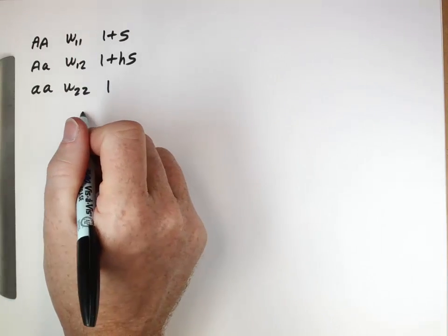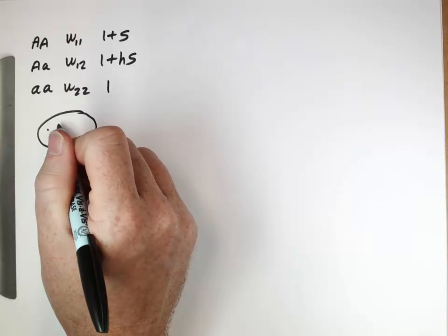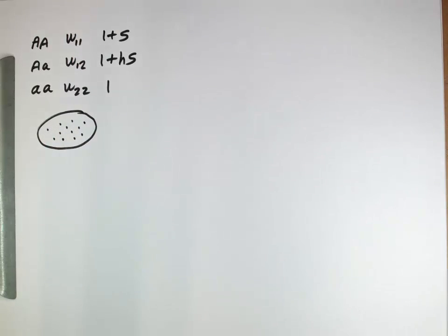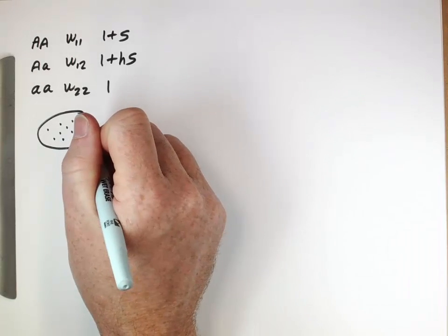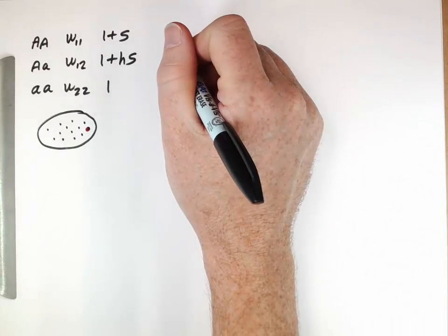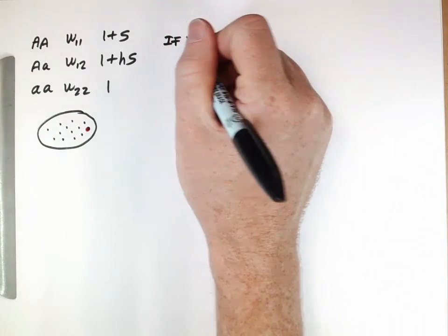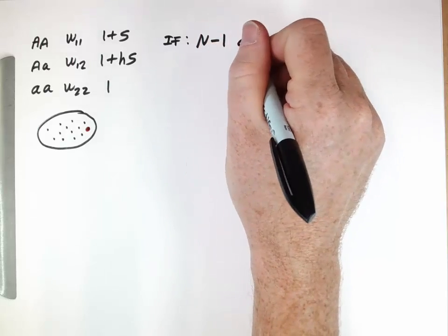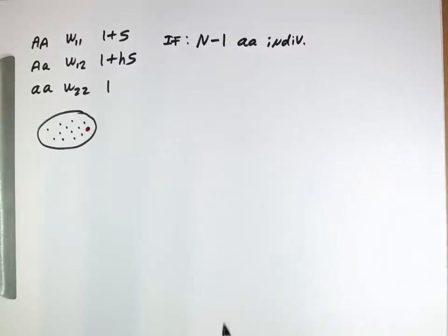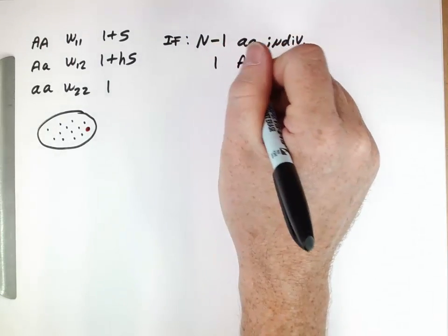So now let's think about a population, and we're going to have a bunch of lowercase a individuals represented by those black dots, or lowercase a alleles represented by those black dots, and then a single capital A allele in that population. So this is a new mutation has created a new allele. So this is a population, let's think about the situation in which we have N-1 of these individuals and one of these individuals.